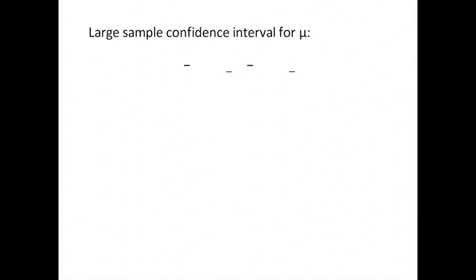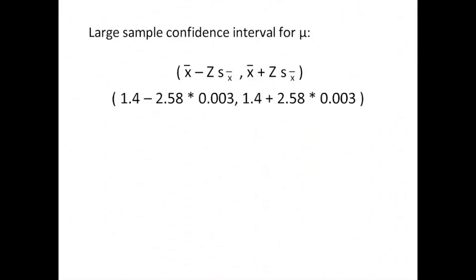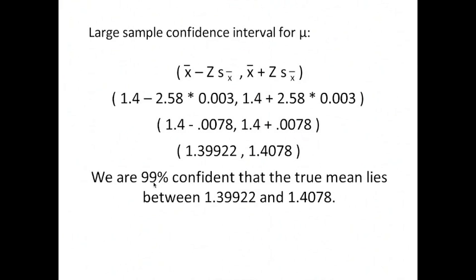A large sample confidence interval for mu is given by the formula x-bar minus z times s of x-bar and x-bar plus z times s of x-bar. Plugging in, we discover that our values become 1.4 minus 2.58 times 0.003, and 1.4 plus 2.58 times 0.003. We would do the multiplication first, so we have 1.4 minus 0.0078, and 1.4 plus 0.0078, which turns out to be 1.39922 and 1.4078. We can now say that we're 99% confident that the true mean lies between 1.39922 and 1.4078.